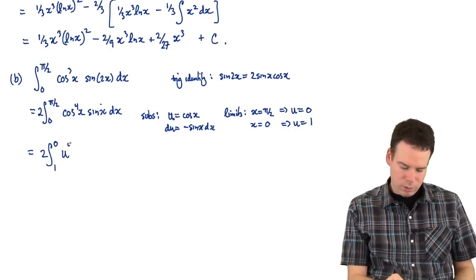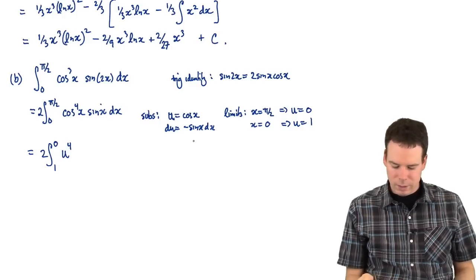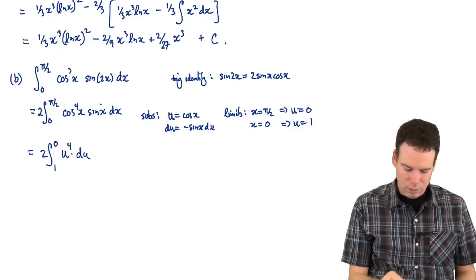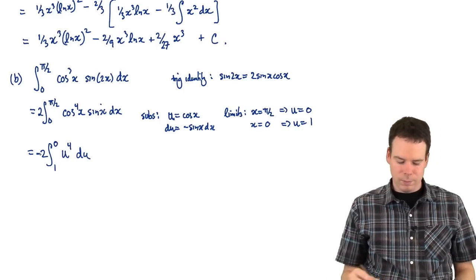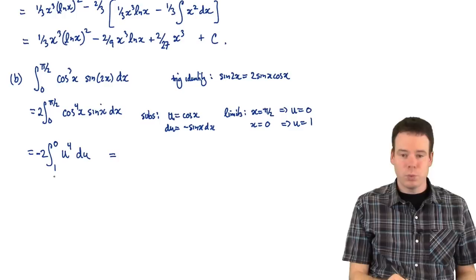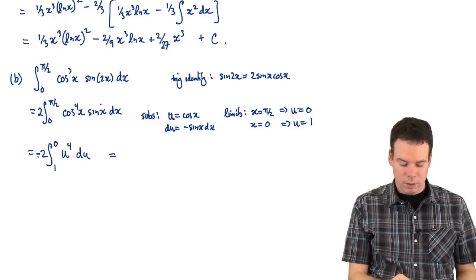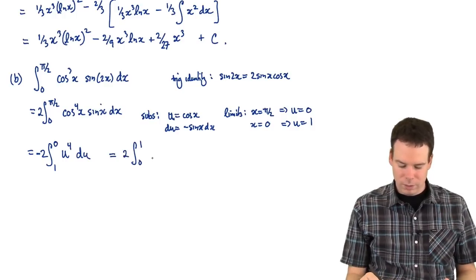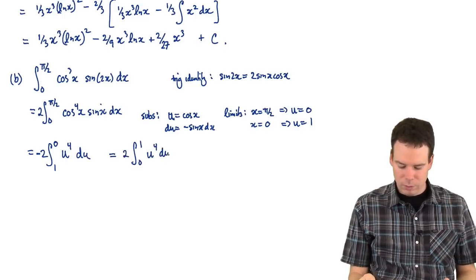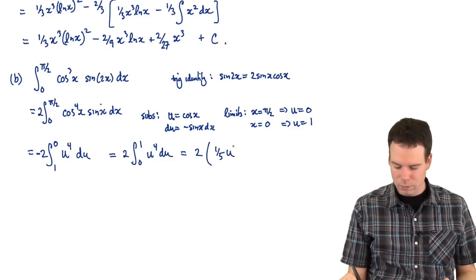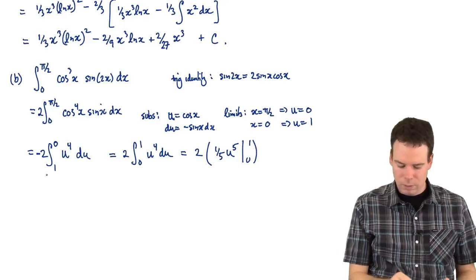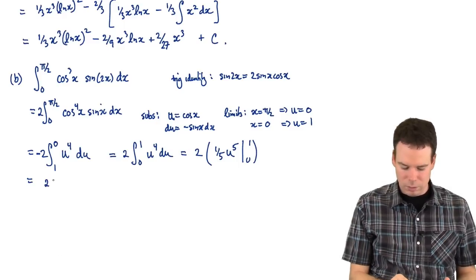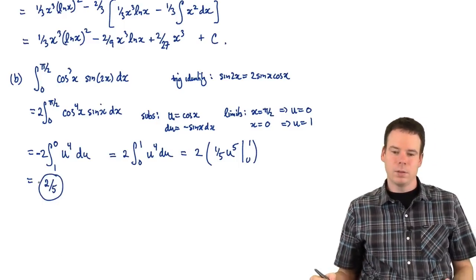Cosine gets replaced with u, so that's u to the fourth. The sine dx gets replaced with a negative du, and I can absorb that negative sign by switching the limits of integration. So I get the integral from zero to one of u to the fourth du, and that's twice the integral of u to the fourth — so that's one-fifth u to the fifth from zero to one. And so our answer is two-fifths.